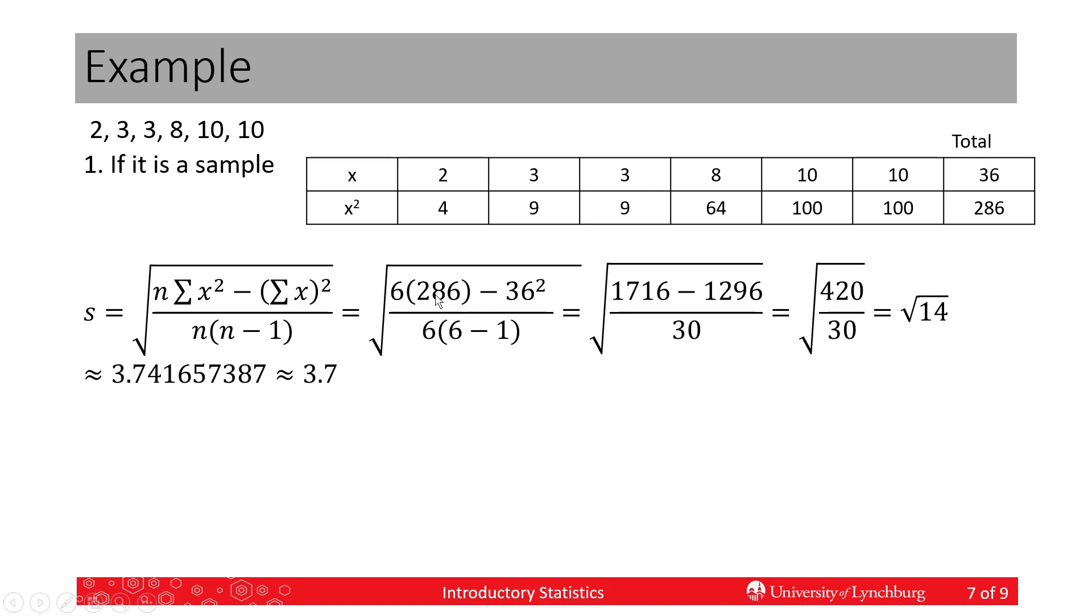1296 is not equal to 286. You can't take a shortcut. Some students think these are the same numbers here, but they're not. The sum of x squared is not equal to the sum of x quantity squared. This is the shortest way to do it, the easiest way. I would show you an easier way if it existed.